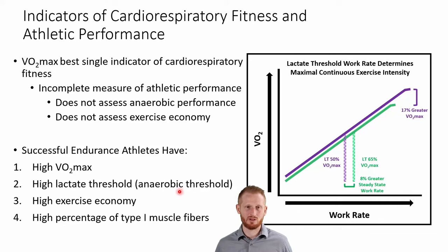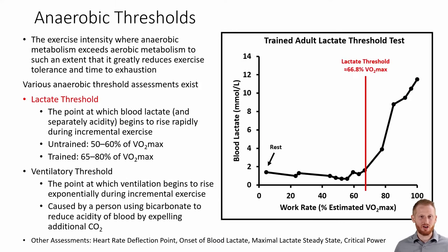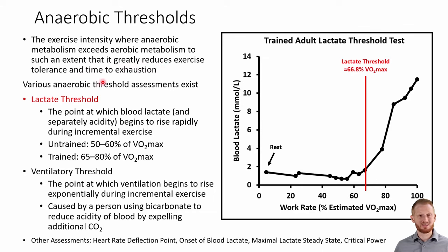The anaerobic threshold is the exercise intensity where anaerobic metabolism exceeds aerobic metabolism to such an extent that it's going to greatly reduce exercise tolerance — time to exhaustion. Having a higher anaerobic threshold means you can stay at a higher intensity without getting exhausted. This is important for endurance sports because most of the race is spent at or around these anaerobic thresholds.